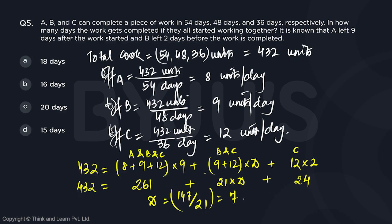So the total number of days that they worked overall, as in the work gets completed, is 9 days initially together, 7 days when only 2 were working and 2 days when only C was working. So that is 9 plus 7 plus 2, which is 18 days. A is going to be our answer.